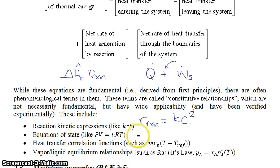Equations of state, something like PV equals NRT, the ideal gas law. Heat transfer correlation functions, so things like MCP times T minus T reference. And other relationships like Raoult's law for vapor-liquid equilibrium, so the partial pressure of component A is equal to your mole fraction in the liquid of that component times its pure species vapor pressure.